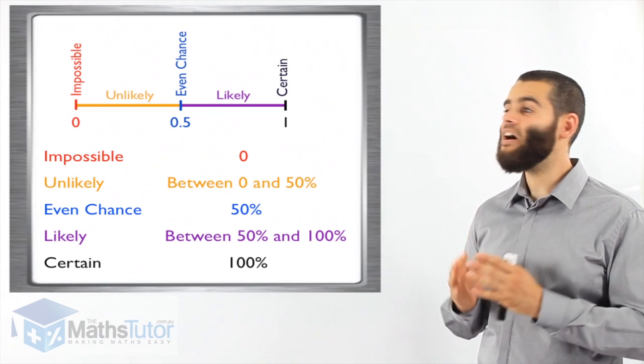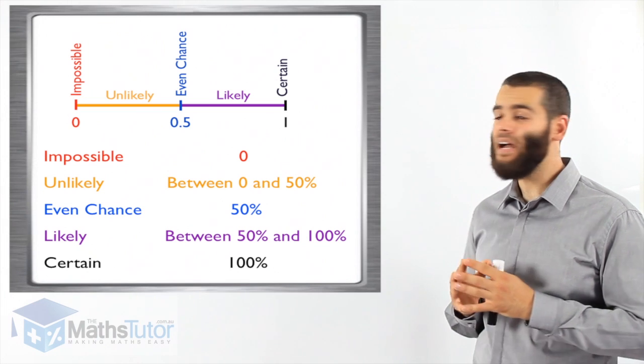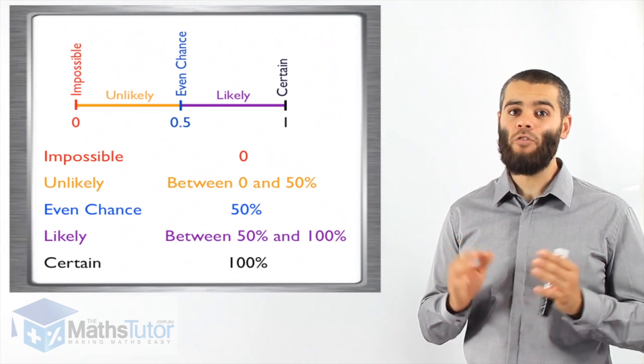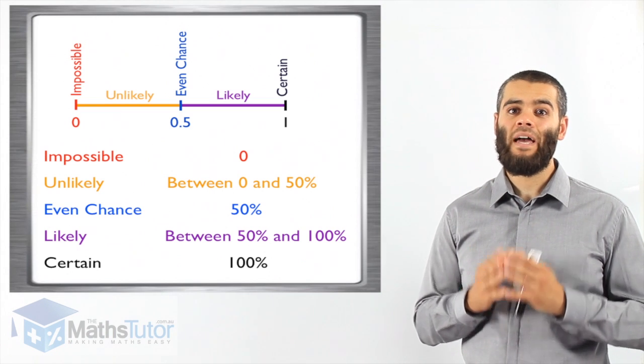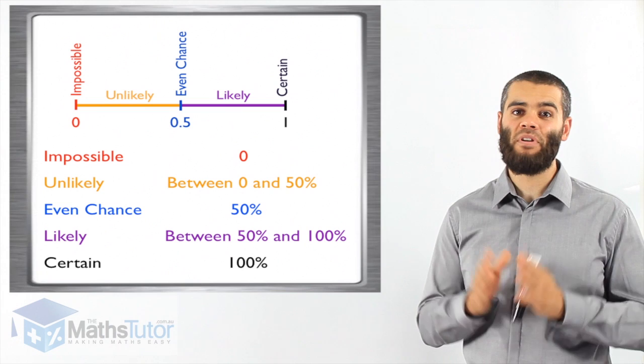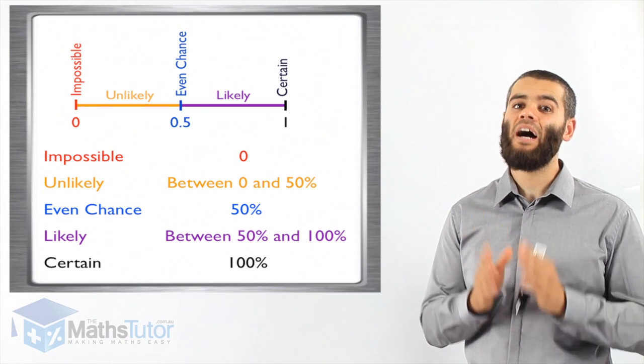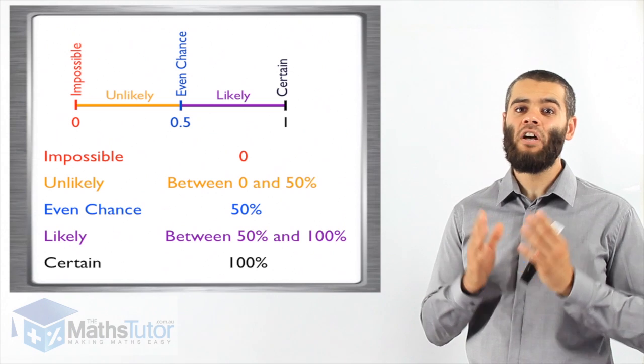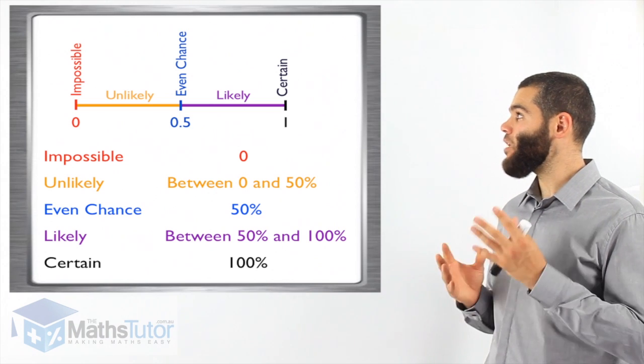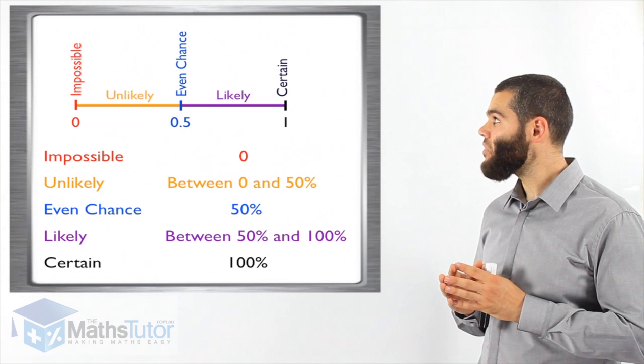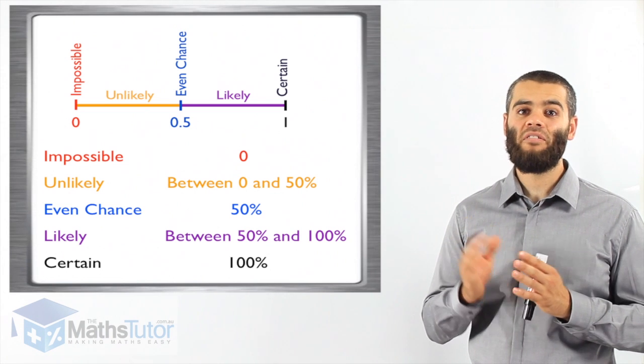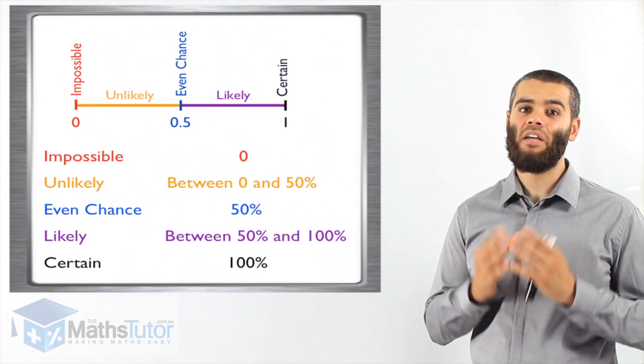Then on the other side of the scale we have one. One meaning a hundred percent, which is certain. That an event is certainly going to happen. It is for sure going to happen. A hundred percent. We have these two ends in the scale. Impossible is zero and one right at the end is a hundred percent. It is certain.